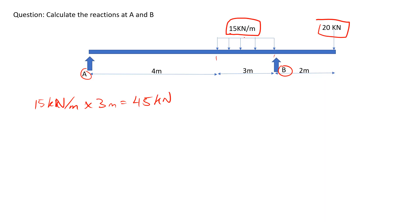Note that this 45 kilonewtons acts directly in the center of the three meters over which it's acting. The center will be three divided by two, which gives 1.5 meters. So we assume this is the center at 1.5 meters.